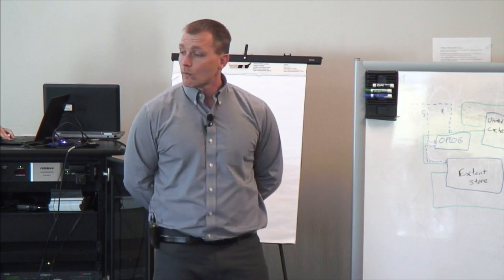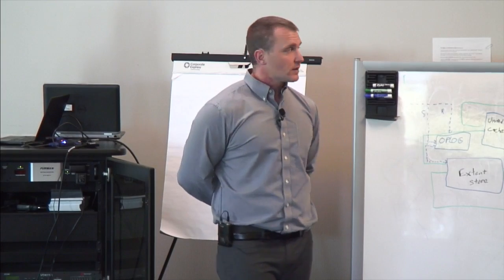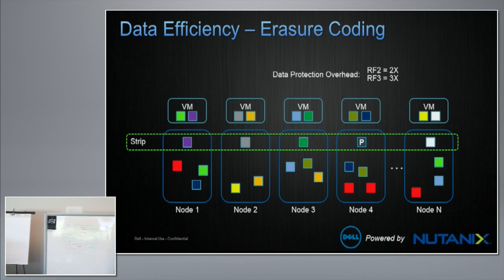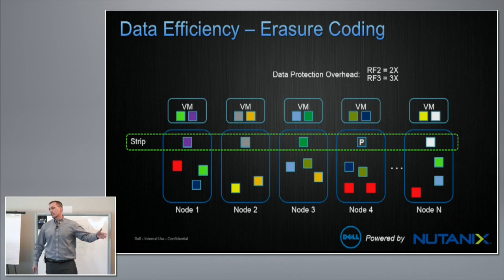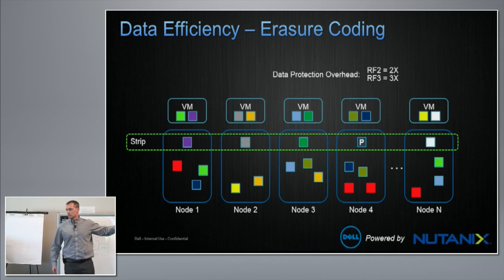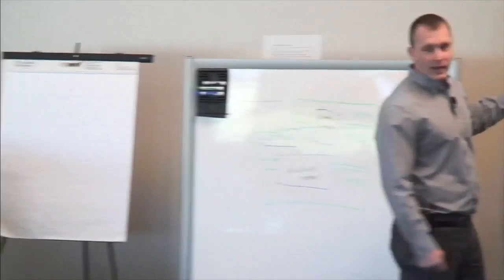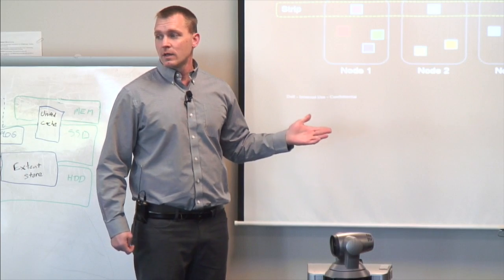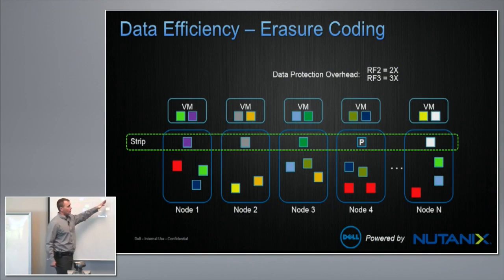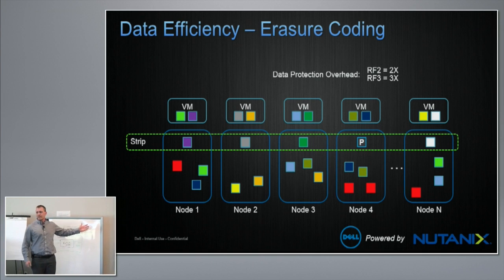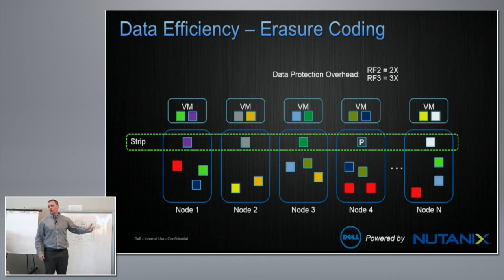When a subsequent write occurs to the stripe, the write comes in, the existing stripe is basically nulled and void, and a new strip has to be formed. So it would be automatically replicated on the write, and then sometime later coalesced into a different stripe. That's why it's set to a day — because it's meant for write-cold data. If those blocks start getting used, we use our MapReduce framework to clean that stripe up and create a new one.